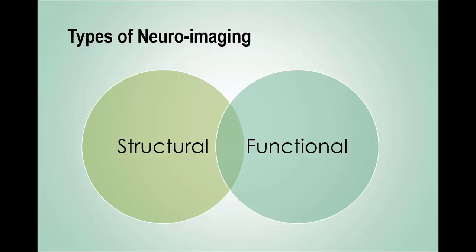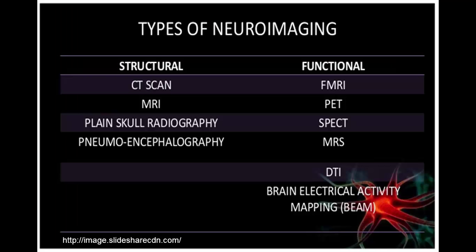Sometimes the same technology can achieve both objectives, and this is the case with magnetic resonance imaging, or MRI, in particular. Another important variable is the time frame in which images are captured — some capture an instant in time, others represent a specific window, and yet others provide ongoing monitoring over time. Here is a list of typical neuroimaging techniques. On the structural side, there is computed tomography, also called computerized axial tomography or CAT scanning, which is two-dimensional X-ray cross-sectioning, and magnetic resonance imaging, or MRI.